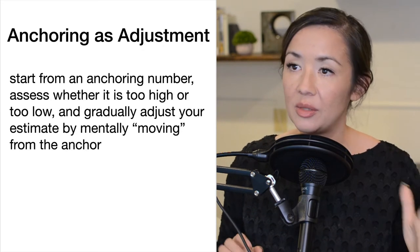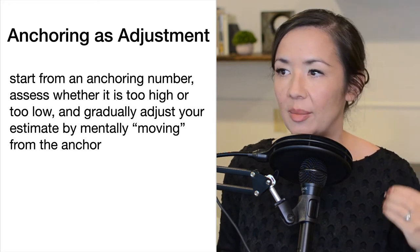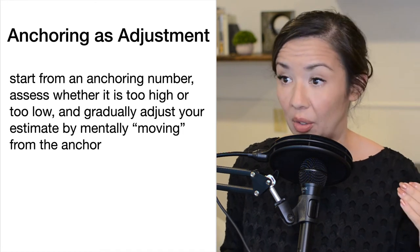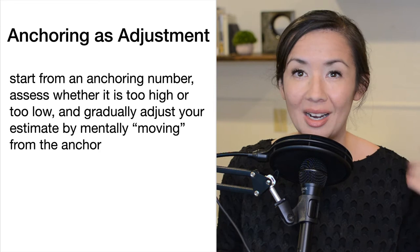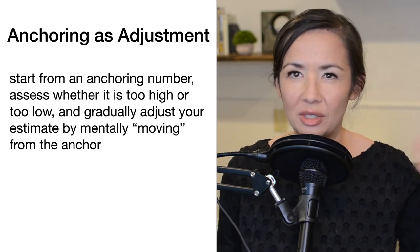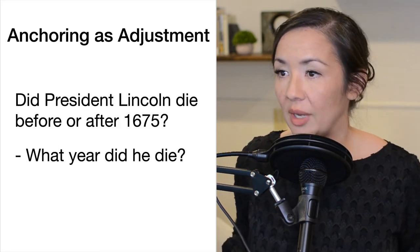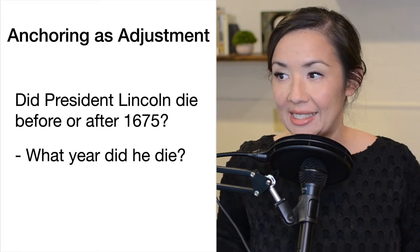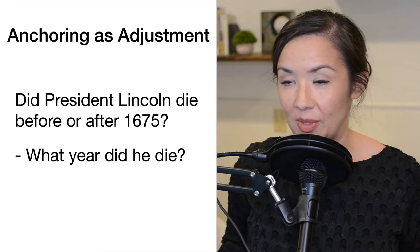The first one we'll talk about is anchoring as adjustment. It's essentially where you start from the anchoring number and assess whether it is too high or too low, and gradually adjust your estimate by moving from the anchor. This is a deliberate cognitive process — you have to effortfully do it. For example: did President Lincoln die before or after 1675? Write down your answer and also estimate what year he died.